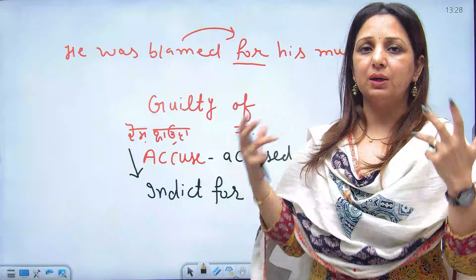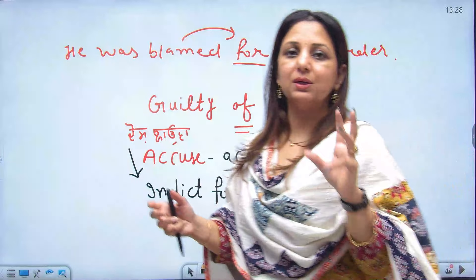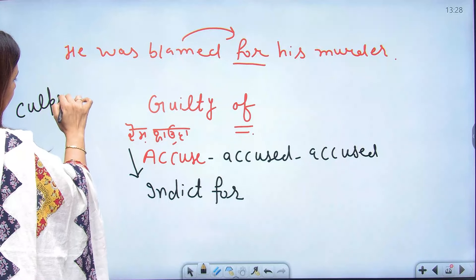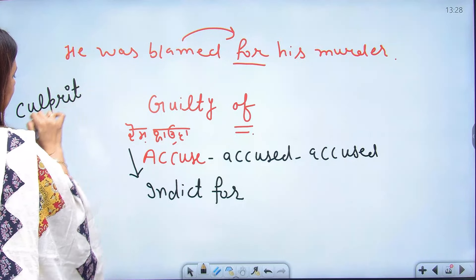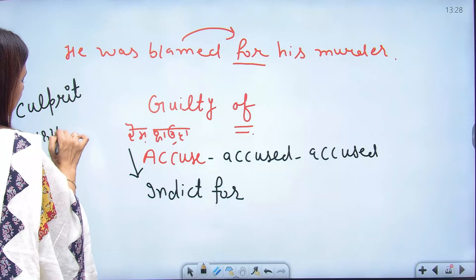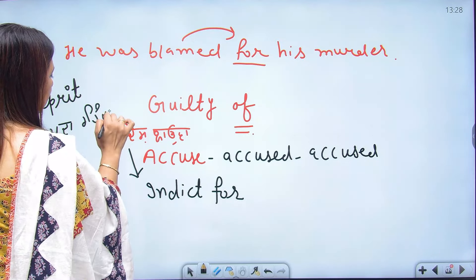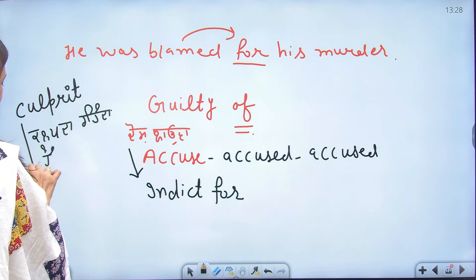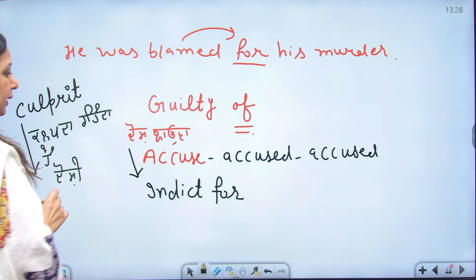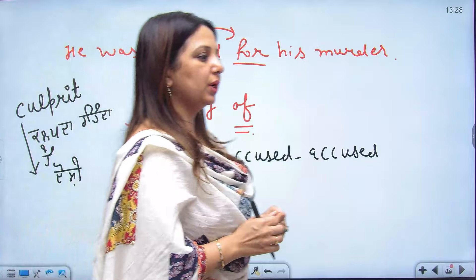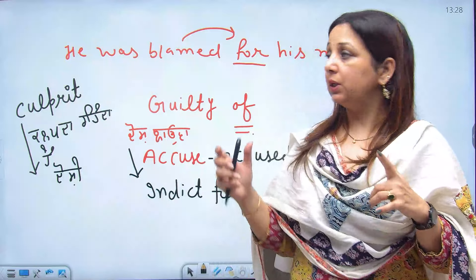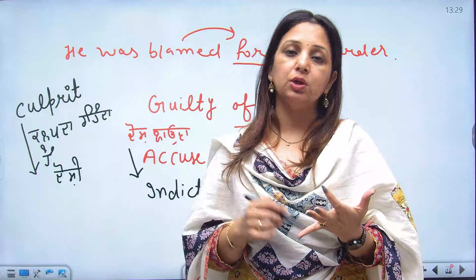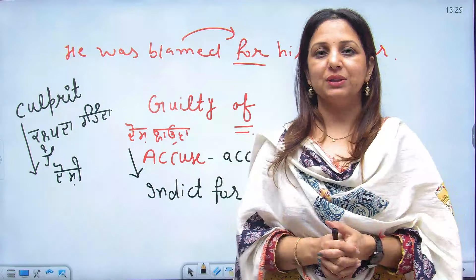All these words mean to blame or charge someone — 'dosh lagauna' in Punjabi. Murder da dosh lagaya — charged with murder. There is also the word 'culprit', meaning a guilty person — someone who has committed a wrongdoing. 'Guilty' and 'culprit' both mean 'doshi' — being found guilty or at fault.